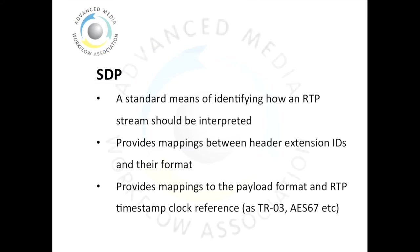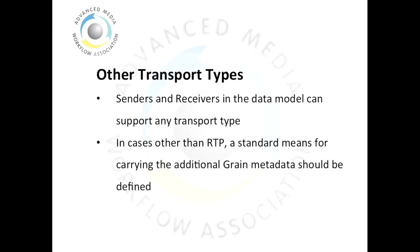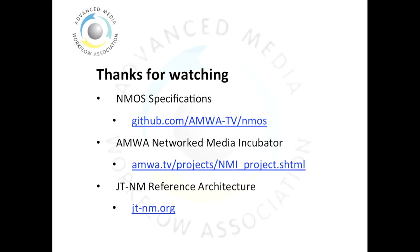Finally, this file also identifies how the RTP timestamp relates to a reference clock as used in TR03 and AES67. At the moment in NMOS we're working with RFC 4175 and 3190 for simplicity and we're using RTP. However, it's important to note that senders and receivers in the data model can support any transport type, and in cases other than RTP with these payloads a standard means for carrying the grain metadata should be defined.